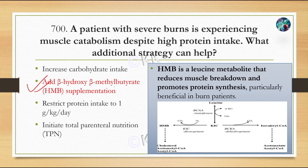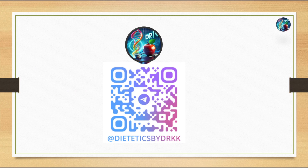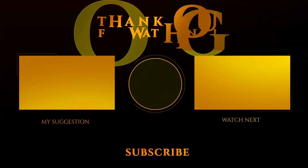The correct option is Option B — beta-hydroxy-beta-methylbutyrate (HMB) supplementation. HMB is a leucine metabolite that reduces muscle breakdown and promotes protein synthesis, particularly beneficial for burn patients. You can practice these questions by joining the Telegram channel to revise and read them. Thank you for watching this video.